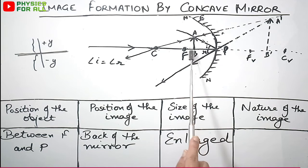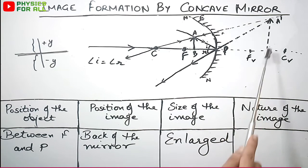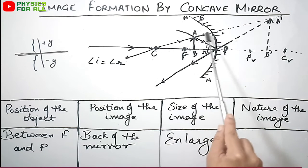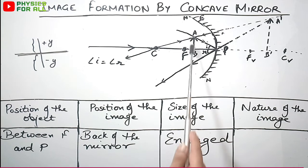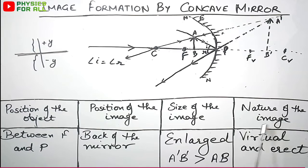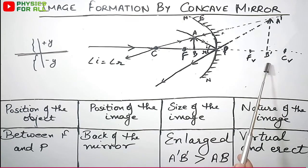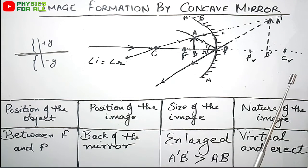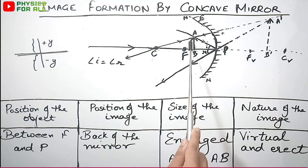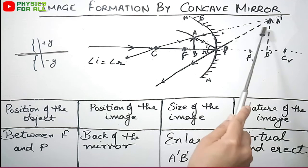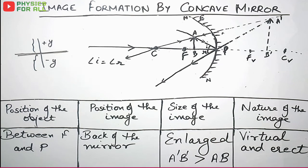The size of the image is enlarged — A'B' is greater than AB, as the image is taller than the object. The nature of the image is virtual and erect. Since the image forms at the back of the mirror, it is always virtual and erect — we cannot physically obtain it on a screen. The image lies in the positive zone above the principal axis, confirming it is erect.